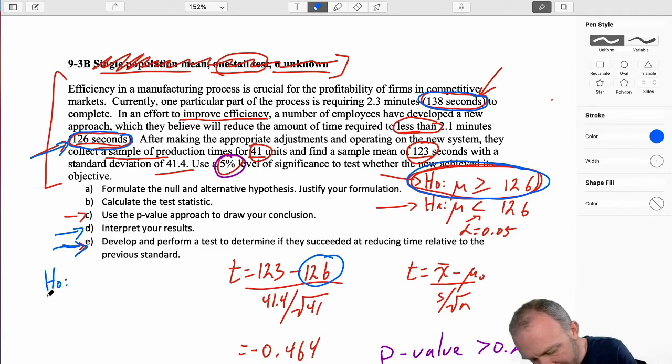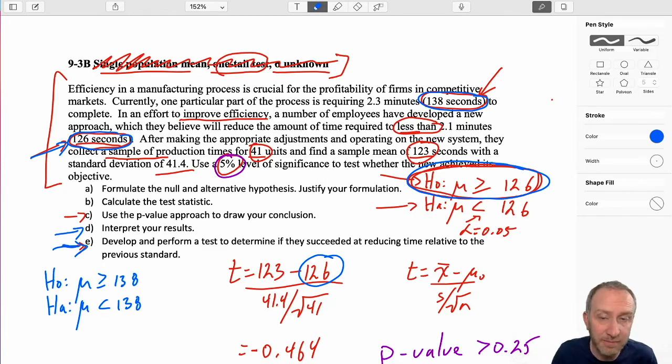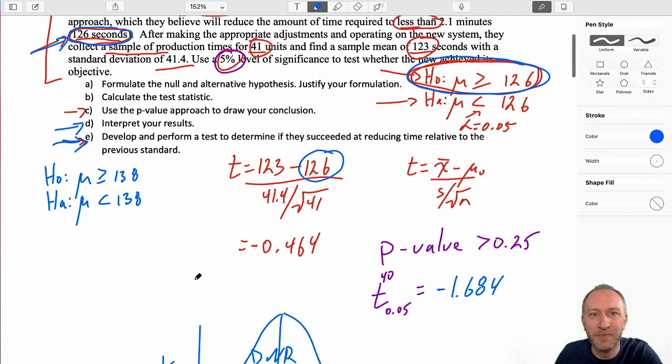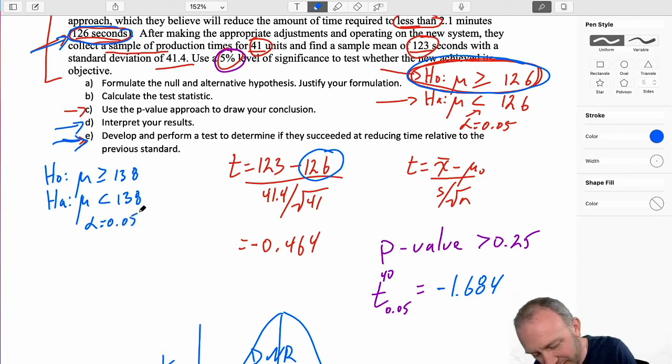Did they succeed at reducing the time relative to the previous standard? The previous standard being 138 seconds. This process is entirely the same. The only difference here is our hypothesized value has changed. To keep this in the context of what we are talking about, we have evidence to show that they failed to succeed at reducing below that goal. They had this goal of 126 seconds. We can't support a claim that they've succeeded. So our evidence here supports the null hypothesis on that one. But did they succeed at reducing it at least below the previous standard?